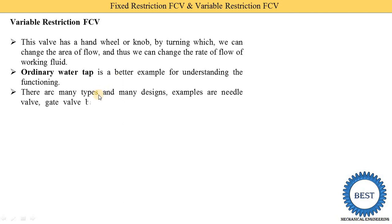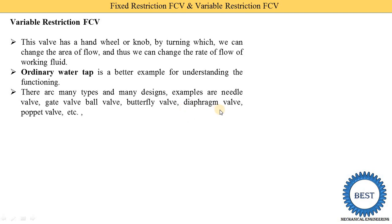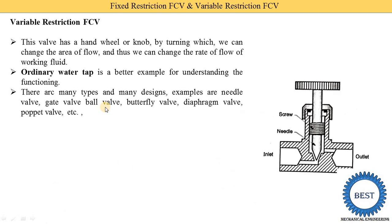There are many types and designs. Examples are needle valve, gate valve, butterfly valve, diaphragm valve, and poppet valve. These are the various examples of the variable restriction flow control valves. For each different type of valve, I will make a separate video so you can easily understand it. Here you can see a simple image of the variable restriction FCV.